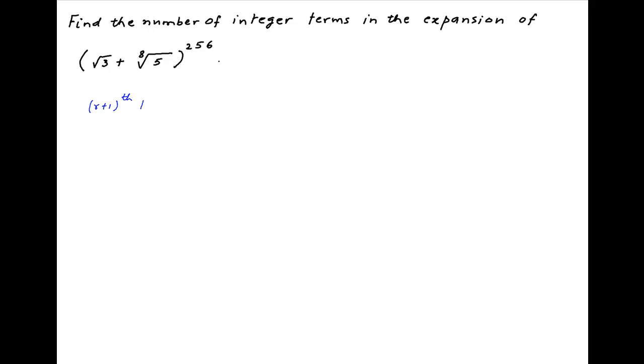The (r+1)th term in the expansion of the given expression is equal to 256 choose r multiplied by √3 raised to the power 256-r multiplied by ⁸√5 raised to the power r. This simplifies to (256 choose r) × 3^((256-r)/2) × 5^(r/8).